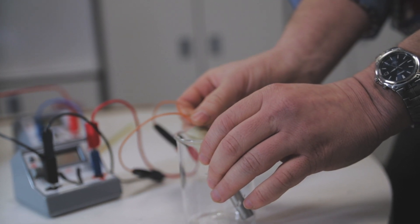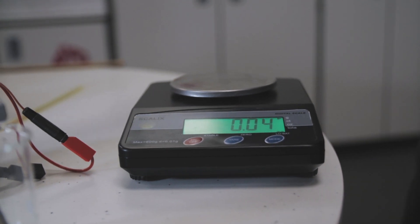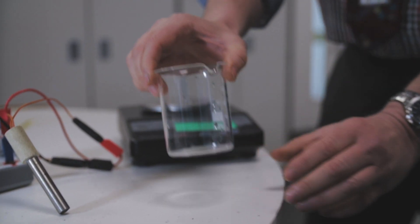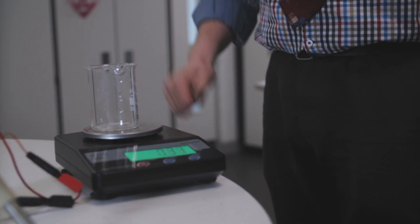When we start our practical experiments, the first thing that we will need to do is to measure the mass of the empty beaker.